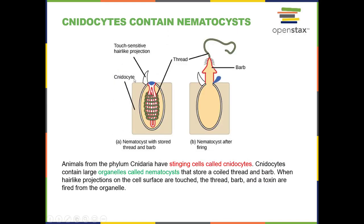This is a close-up of a cnidocyte, which is the cell. Within the cell, the most prominent organelle is the nematocyst. Note that '-cyte' means cell and '-cyst' does not — so cnidocytes are the cells and nematocysts are the organelles inside them. The nematocyst has a touch-sensitive trigger: anything that touches the cell will cause this harpoon-like structure to shoot out, injecting venom or toxin into whatever touches it. Cnidocytes are distributed all over the tentacles.